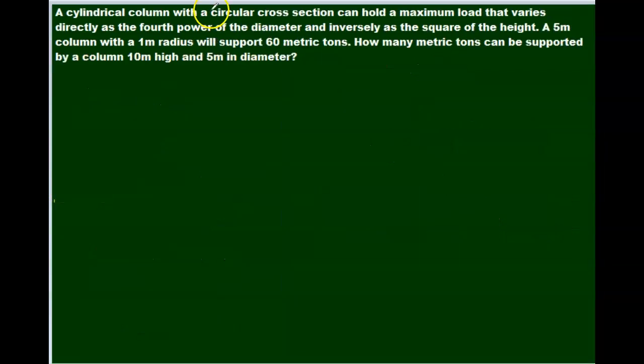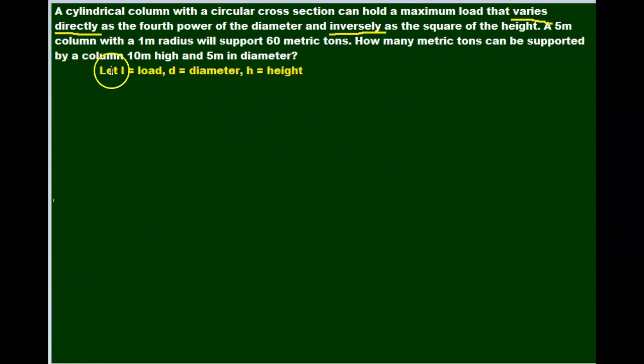This problem is a little bit more complicated, but the method is still the same. A cylindrical column with a circular cross section can hold a maximum load that varies directly as the fourth power of the diameter and inversely as the square of the height. A 5 meter column with a 1 meter radius will support 60 metric tons. How many metric tons can be supported by a column 10 meters high and 5 meters in diameter? So we always state what our variables are. In this case, we're talking about load, diameter, and height. So we're going to let l equals load, d equals diameter, and height equals h.